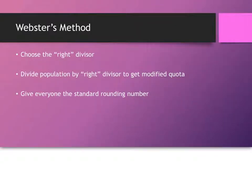Now, this one is, again, a choose the right divisor, so we're not going to do the standard divisor. We're going to do a different divisor. And instead of always rounding everything down or always rounding everything up, like Jefferson's and Adams' method, in Webster's method, you just do standard rounding. So you're not always taking the lower quota or the upper quota, you're taking the standard rounding number.